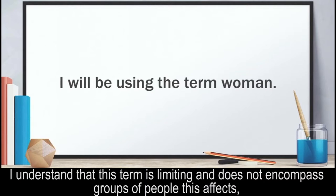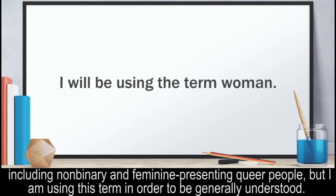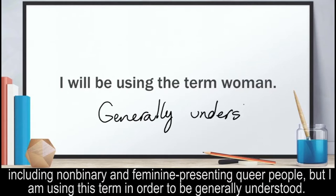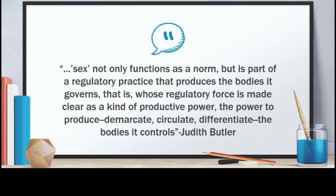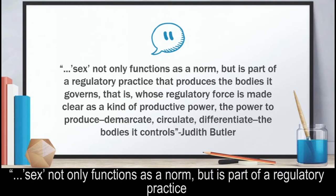I understand that this term is limiting and does not encompass groups of people, including non-binary and feminine-presenting queer people, but I am using this term in order to be generally understood. In her groundbreaking book, Bodies That Matter, philosopher and theorist Judith Butler writes, Sex not only functions as a norm, but it is part of a regulatory practice that produces the bodies it governs.